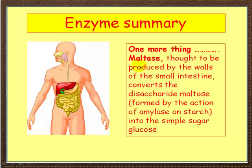Maltase is produced by the walls of the small intestine. It converts the disaccharide maltose — which is formed by the action of amylase on starch — into the simple sugar glucose. So it's a two-stage process: amylase breaks starch down into maltose, and then maltase breaks the maltose down into glucose.